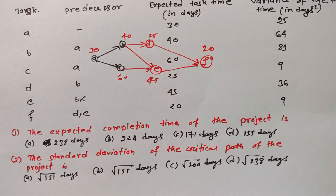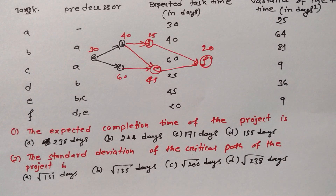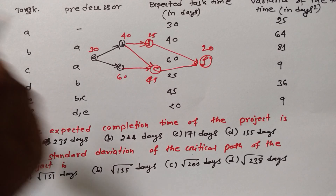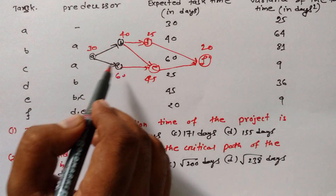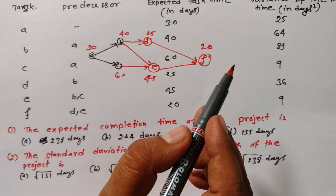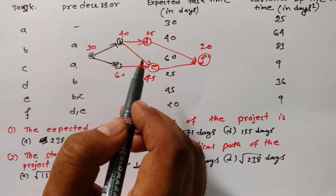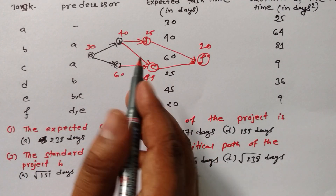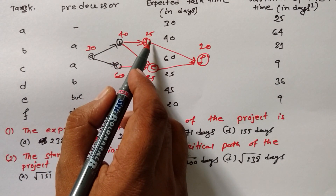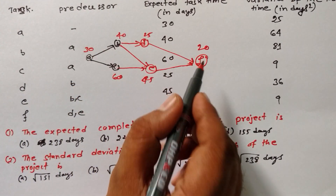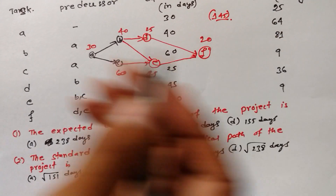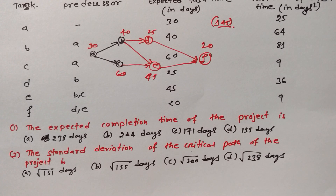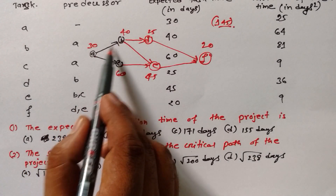The given values are: 30, 40, 25, 20 and 30, 60, 45. We need to find the path that takes the maximum number of days. We cannot go backward — always follow the arrows forward. Path 1: A→B→D→F = 30 + 40 + 25 + 20 = 115... wait, 30 + 40 = 70, then +25 = 95, then +20 = 115, giving 145 days on this path.